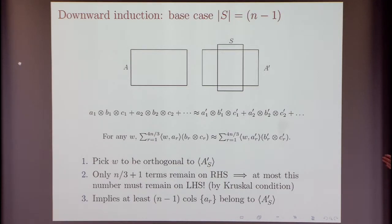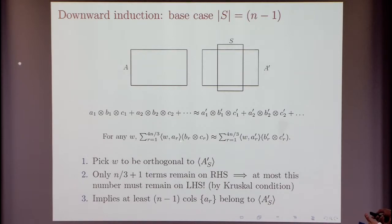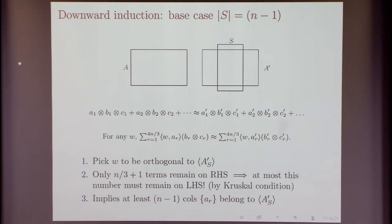So for this w, you must have at most n/3 terms on the left side with non-zero coefficients, meaning at least n-1 columns A_R are also orthogonal to w. Being orthogonal to w essentially means being in the space spanned by A_S. This is the gist of the proof for the base case S of size n-1.